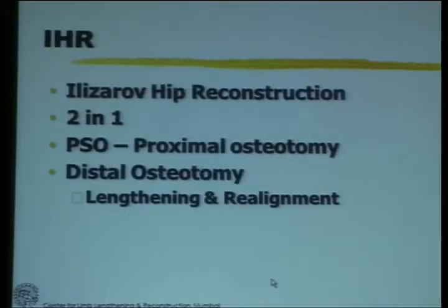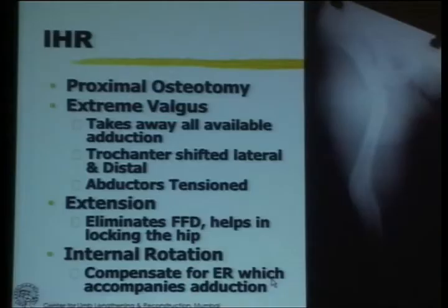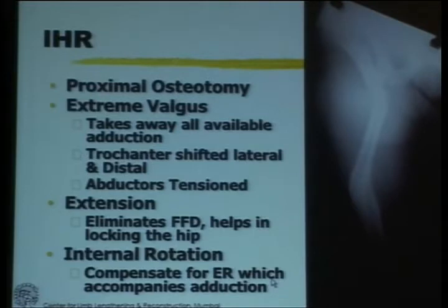This is really a two-in-one procedure. What it consists of is a pelvic support osteotomy which is the proximal, and another distal osteotomy for the lengthening and realignment. In the proximal osteotomy, because we are doing the second osteotomy lower down, we can do an extreme amount of valgus — 45 to 60 degrees of valgus can be given. What that does is shift the trochanter lateral and distal and therefore tension the abductors.